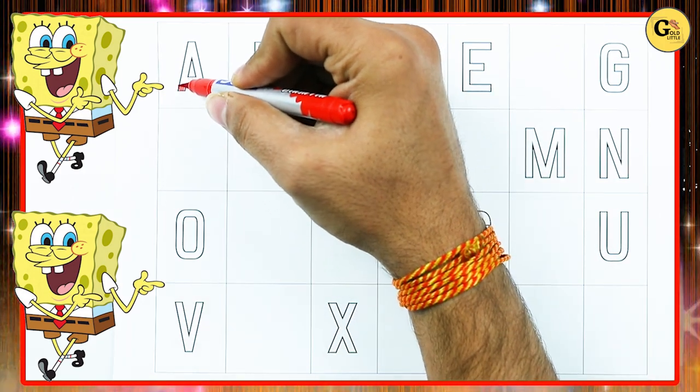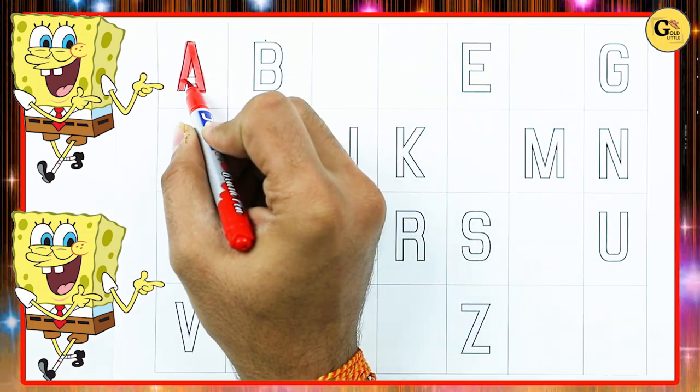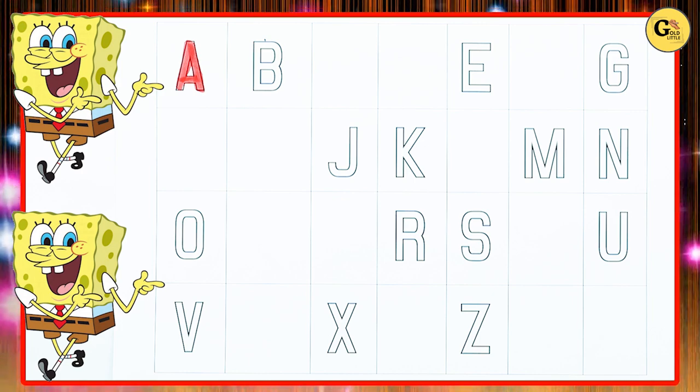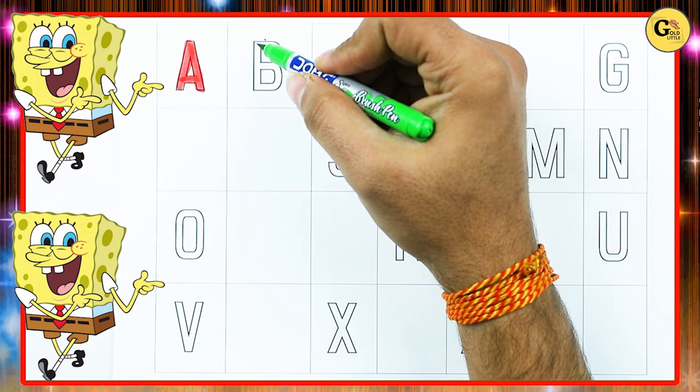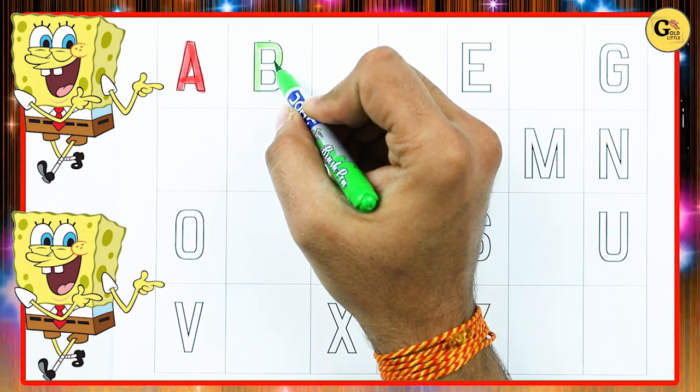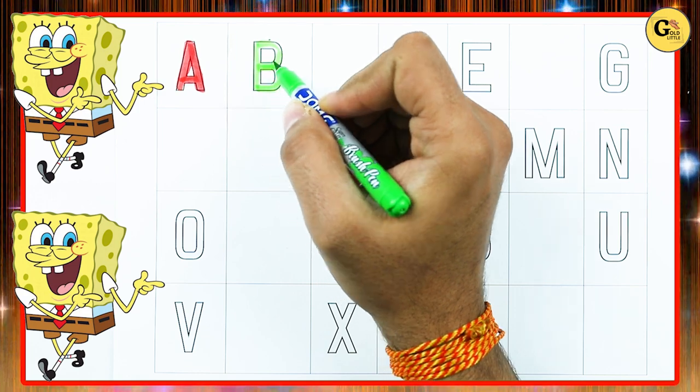A. A for apple with red color. A for apple. B. B for ball with green color.